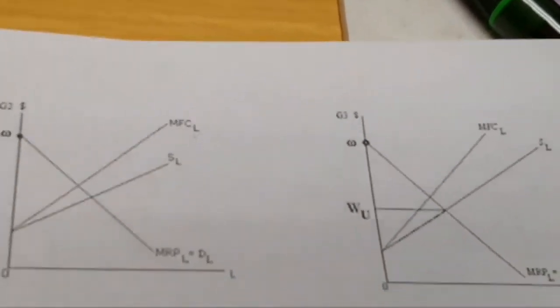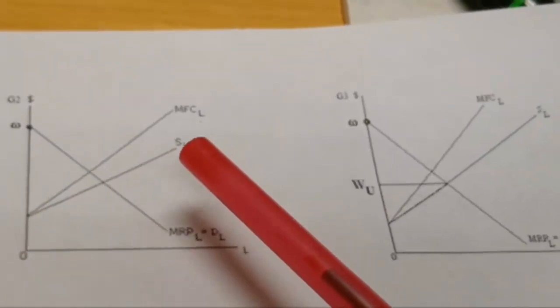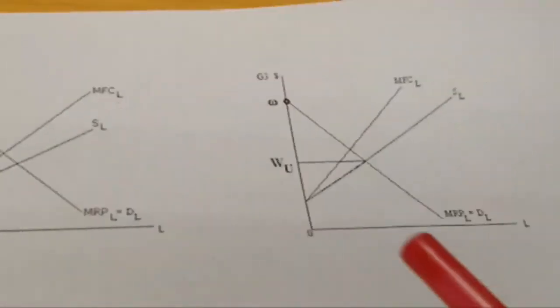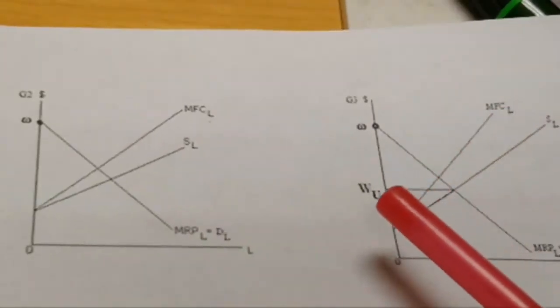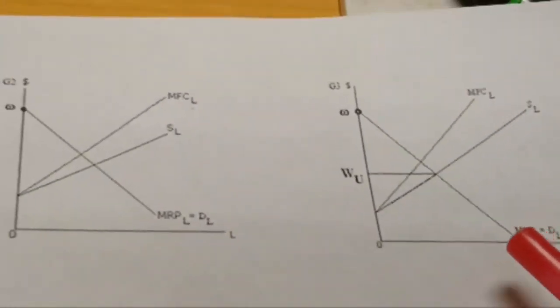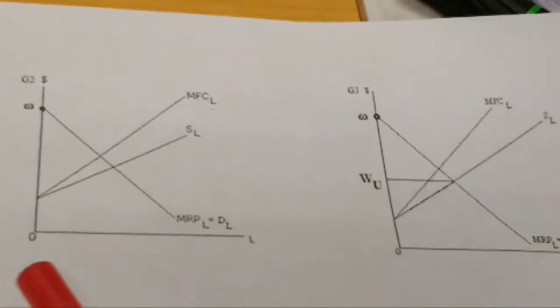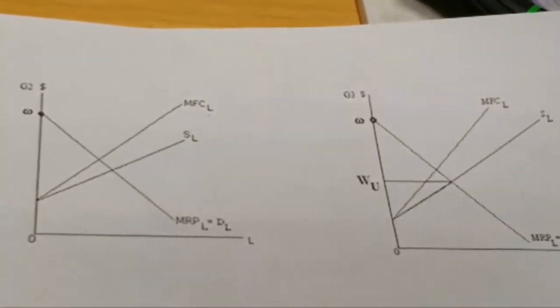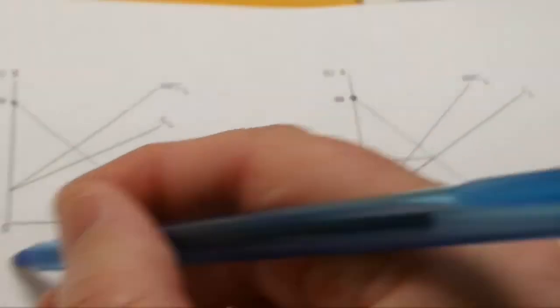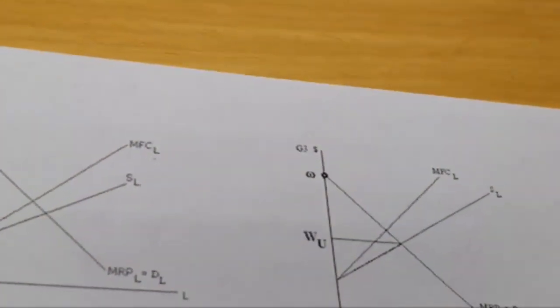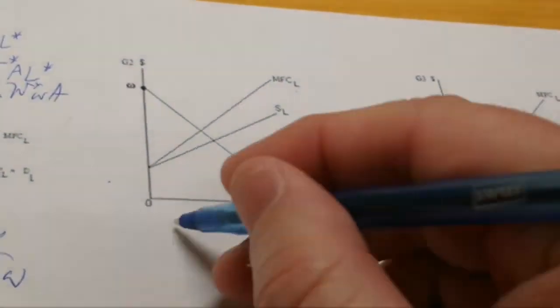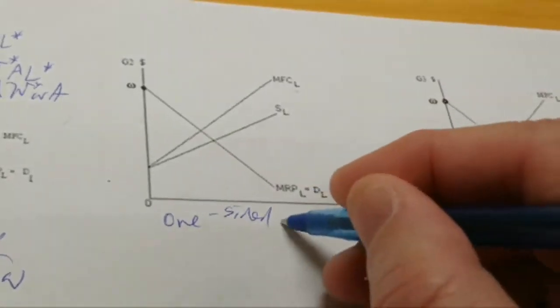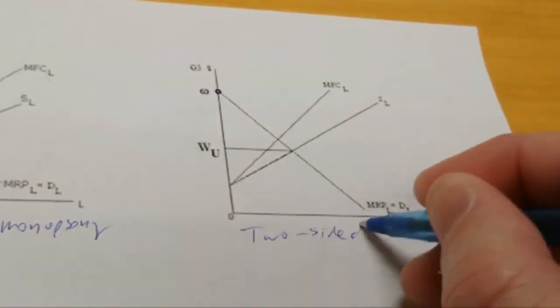Now, if you take a look at this next graph, graph G2, you'll notice the labor supply curve is upward sloping. So that tells you it's a monopsony. But notice we don't have a W sub U. The graph right next door has a W sub U. It looks almost identical to that first one, except there's a union contract wage here and there's not there. So this here would be a bilateral or two-sided monopsony because of the union contract wage. And this would be a unilateral or one-sided monopsony because it's absent there. So this is a one-sided monopsony.